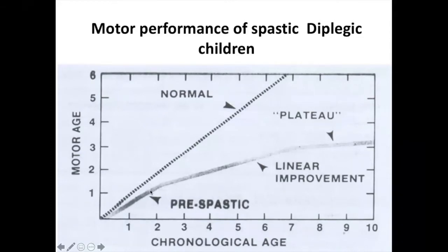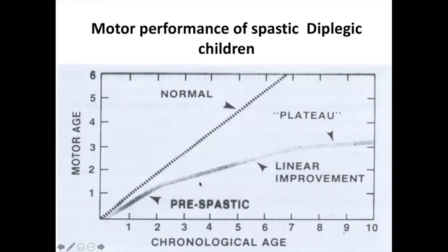If there is not good improvement by two years, there may be slow improvement in gait and posture up to six or seven years. After seven years there is a plateau — no significant improvement. Whatever improvement you want in a cerebral palsy patient should be achieved between one and seven years, before school age. You must correct deficiencies so the child develops good motor function performance.